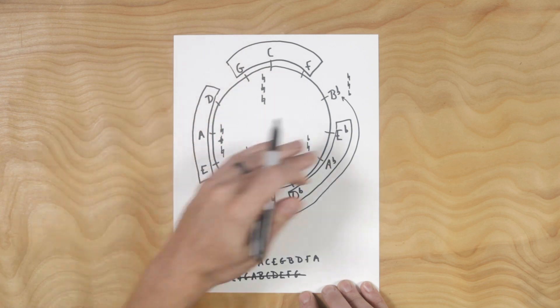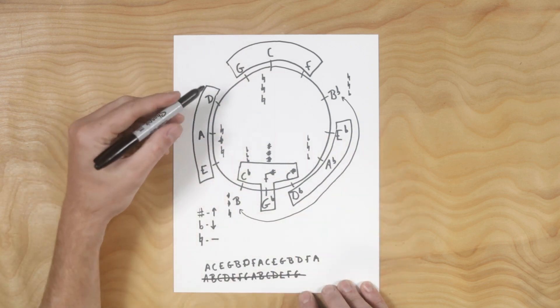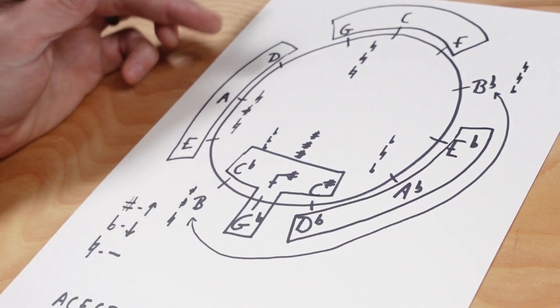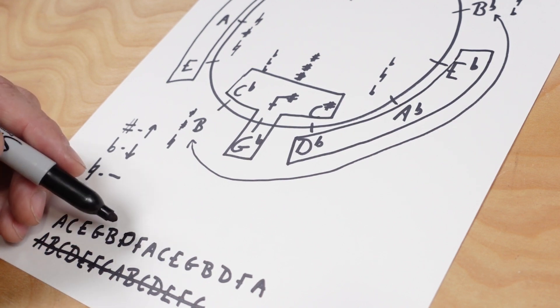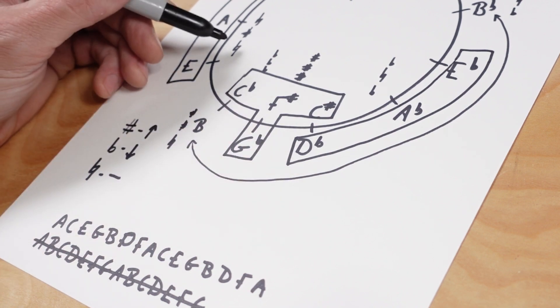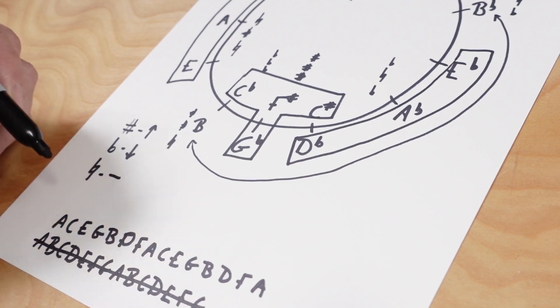So you can memorize these in quadrants, but you can also memorize them using mirror keys. So if I know that D, it starts natural, so it's natural, sharp, natural. It's part of the DEA. So it's D, F sharp, A. That means that the opposite mirror key, D flat, is the opposite with its accidental. So it's flat, natural, flat. D flat, F, A flat.